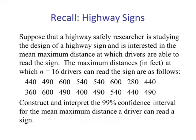Example 5 — highway sign: a highway safety researcher is studying the design of a highway sign and is interested in the mean maximum distance at which drivers are able to read the sign. The maximum distances, measured in feet, for n=16 drivers are provided as raw data. We want to construct and interpret the 99% confidence interval for the mean maximum distance a driver can read the sign.